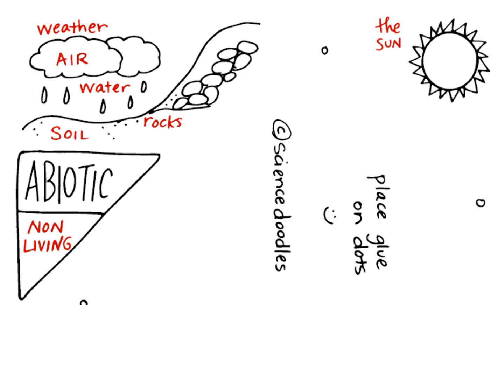Abiotic things are things that are non-living, not alive, never were alive — like weather, air, water, rock, soil, and the sun.